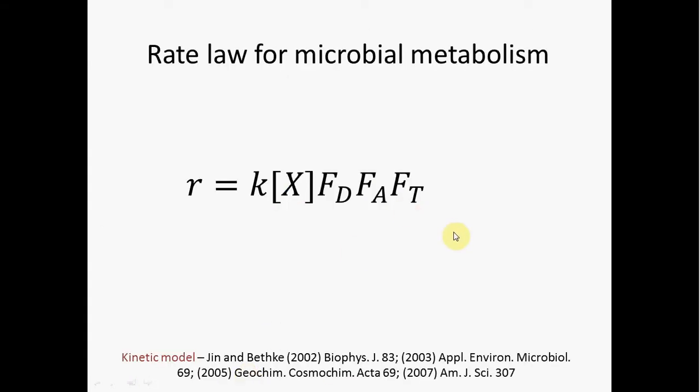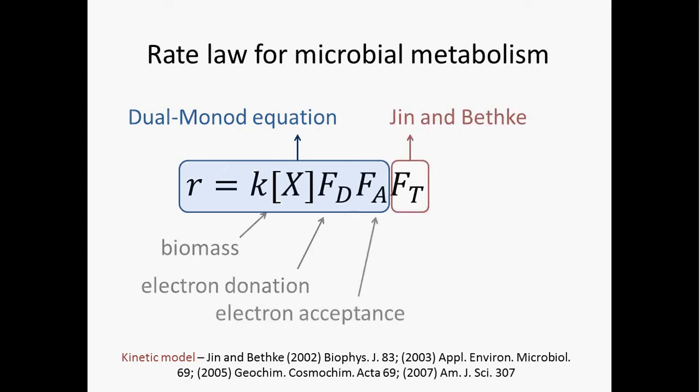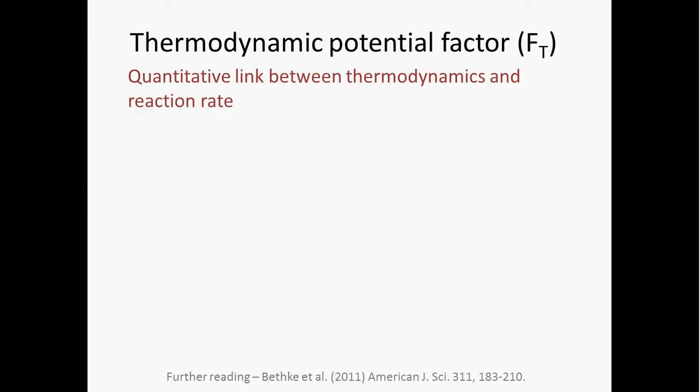So here's the kinetic model that I introduced to you in the earlier lecture. The first part of this is the dual Monod equation, which accounts for the effect of the number of cells on the rate of the reaction, as well as kinetic factors related to electron donation and electron acceptance. And then this last part is the part that Xu, Shenzhen, and Craig Bethke added - the thermodynamic potential factor, which accounts for the thermodynamic drive of the reaction. Basically, it is a quantitative link between thermodynamics and microbial reaction rates.